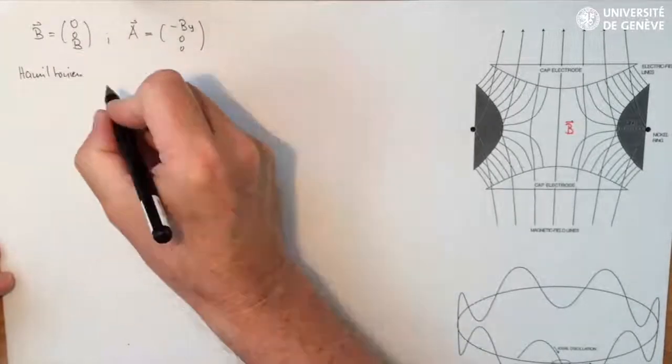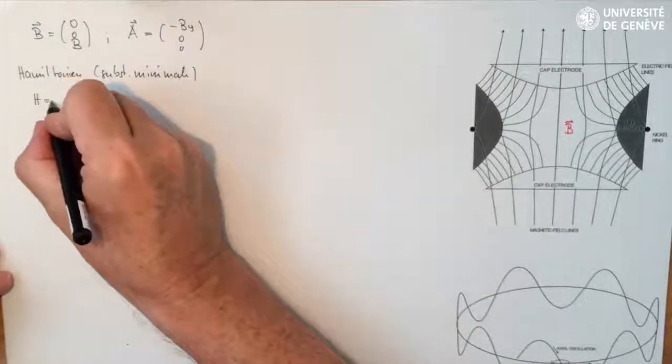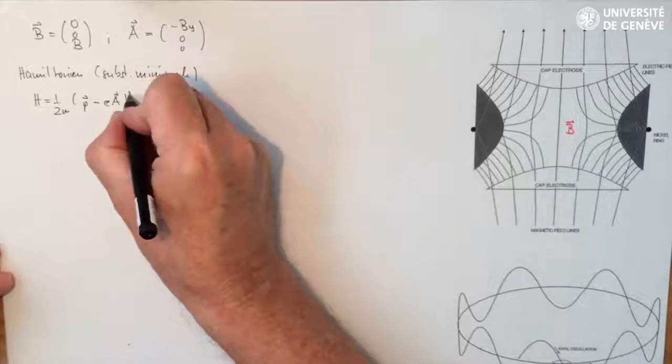So the Hamiltonian of such a system, using minimal substitution, is 1 over 2m times (p minus eA) squared.